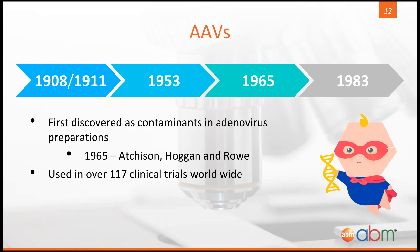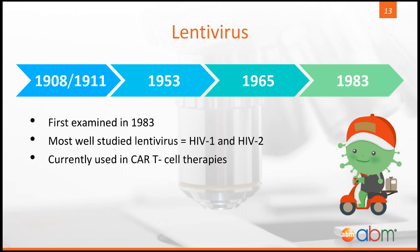In 1965, the adeno-associated virus was discovered almost accidentally. During the preparation of adenoviruses, Atchison, Hogan, and Roe discovered what appeared to be contaminants in their product, but was in fact a new category of vector. The AAV has been incredibly useful in disease treatment and is currently being used in over 117 clinical trials to date, including the treatment of cystic fibrosis and hemophilia.